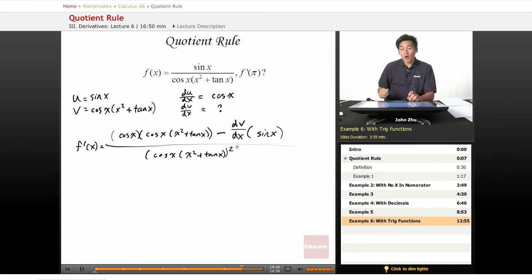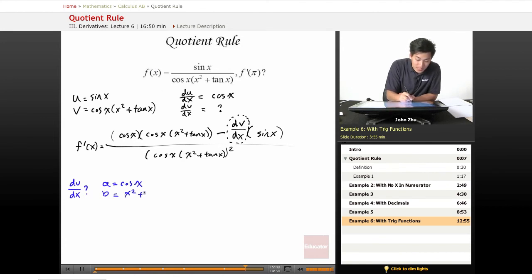Now all we're left to do is find this dv dx term. We can find dv dx - let's say our a equals cosine of x, our b equals x squared plus tangent of x.